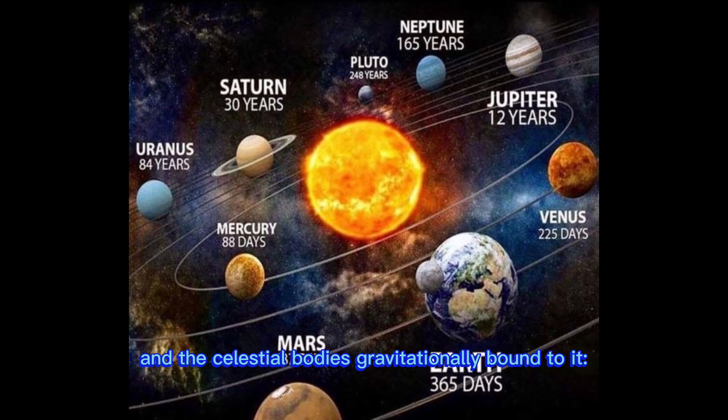gravitationally bound to it, eight planets, their moons and an assortment of dwarf planets, asteroids, comets and meteoroids.